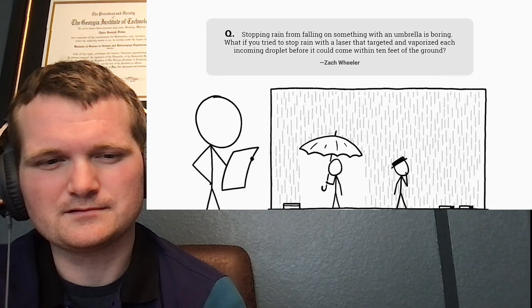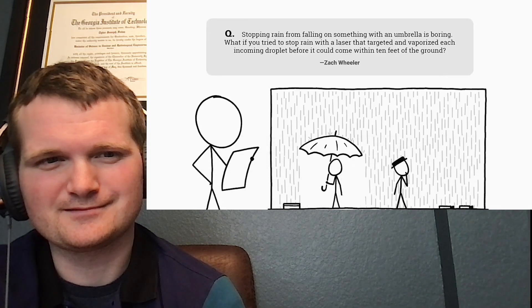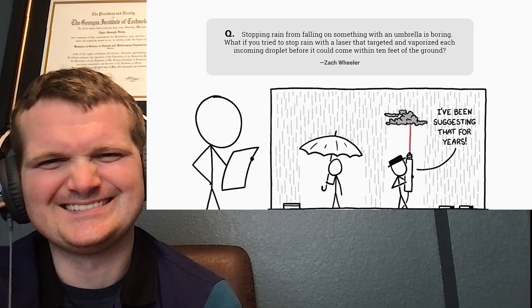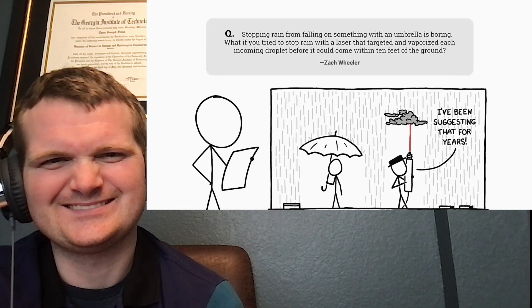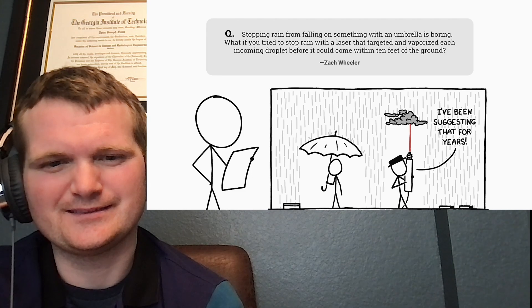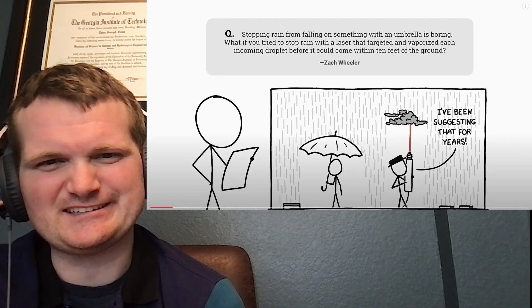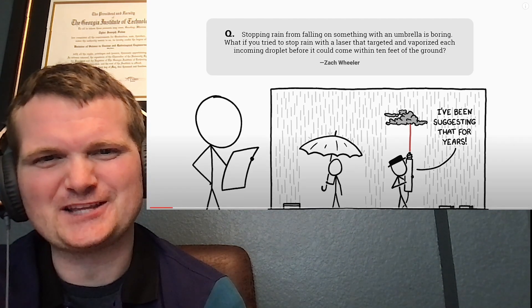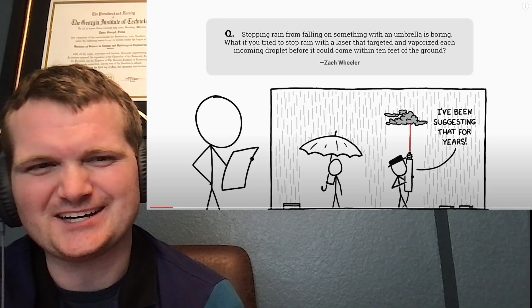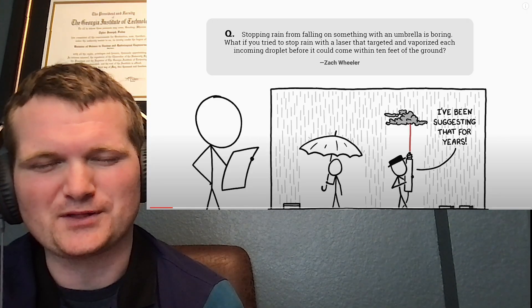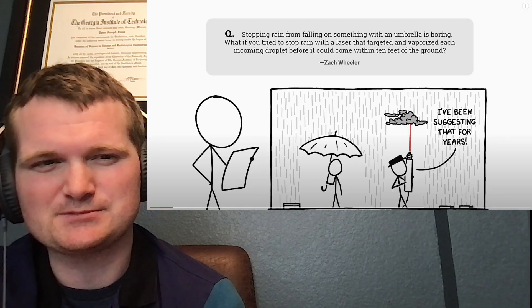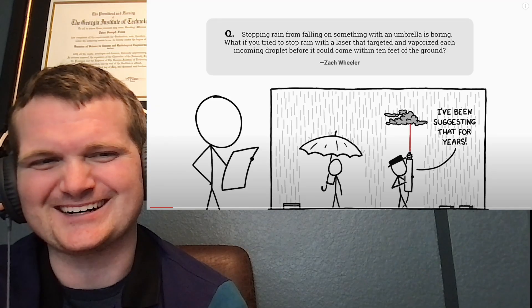From Zach who asks: stopping rain from falling on something with an umbrella is boring. What if you tried to stop rain with a laser that targeted and vaporized each incoming droplet before it could come within 10 feet of the ground? Now that's an interesting idea. Let's just go ahead and target the cloud at least according to this diagram. Go ahead and punch a hole through that thing that's dropping all the rain on you. I'm sure that's not going to have any adverse weather consequences.